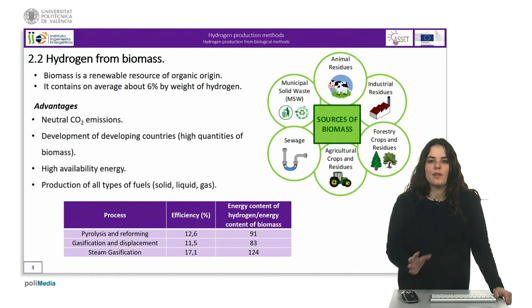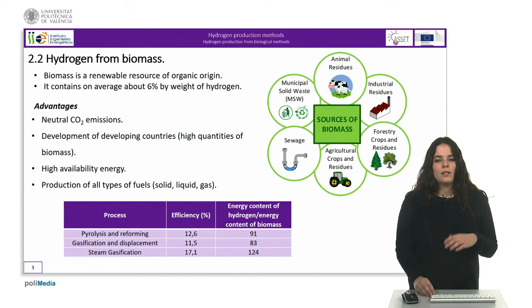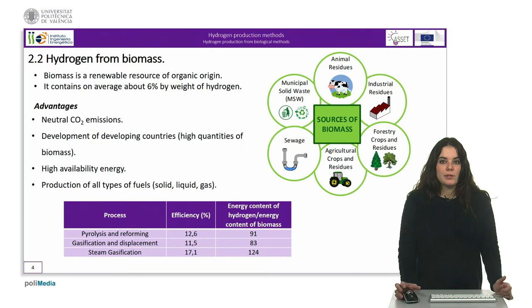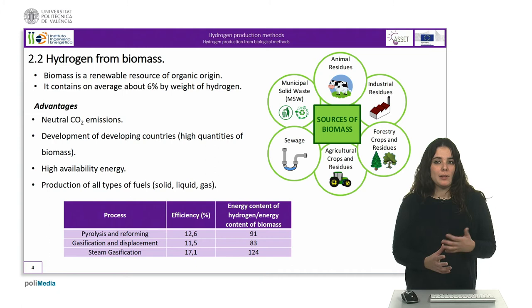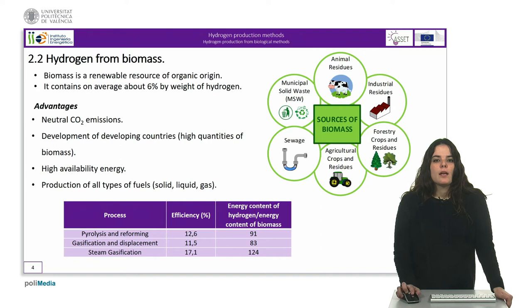Although the energy efficiency of the transformation is high, the production of hydrogen from biomass is moderate due to its low hydrogen content, compared for example with the 25% content that natural gas has. Among the advantages of using biomass, we can identify that it is a neutral CO2 process because the emitted CO2 was previously absorbed by the plants. Using biomass also supports the development of developing countries when they have high quantities of biomass available, and enables production of solid fuels, liquid fuels such as biodiesel or bioethanol, or gaseous fuels such as biogas.